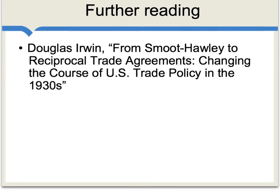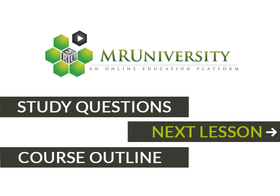The Great Depression lasted through the 1930s in the U.S., but the happy side of the story is that in later parts of the 1930s, the U.S. started moving back toward free trade. To read more about that, you can see Doug Irwin's piece on the later reciprocal free trade agreements. For more general information, you can Google 'Smoot-Hawley Tariff.' Thank you very much.